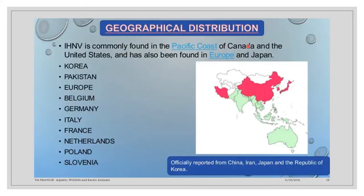This is the geographical distribution of cases reporting IHN virus. IHNV is commonly found in the Pacific coast of Canada and the U.S. and has also been found in Europe and Japan. These are the list of countries that have reportedly had IHNV infection. We also have a diagram showing the countries that have officially reported IHN, particularly China, Iran, Japan, and Korea.